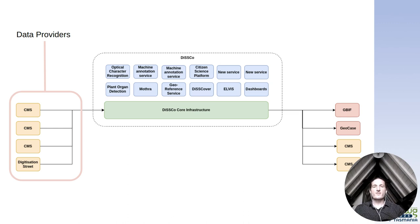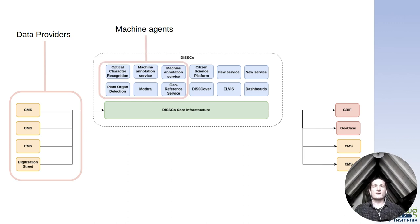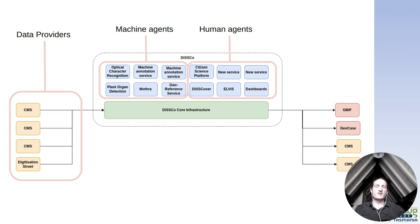We then provide a platform on top of this data on which generic services can run. These generic services could be machine-acting services, such as geo-referencing services or services which perform optical character recognition. Other services can be in the form of human-facing services. Through different websites, portals or citizen science platforms, data can be generated which can be integrated into the DISCO platform.